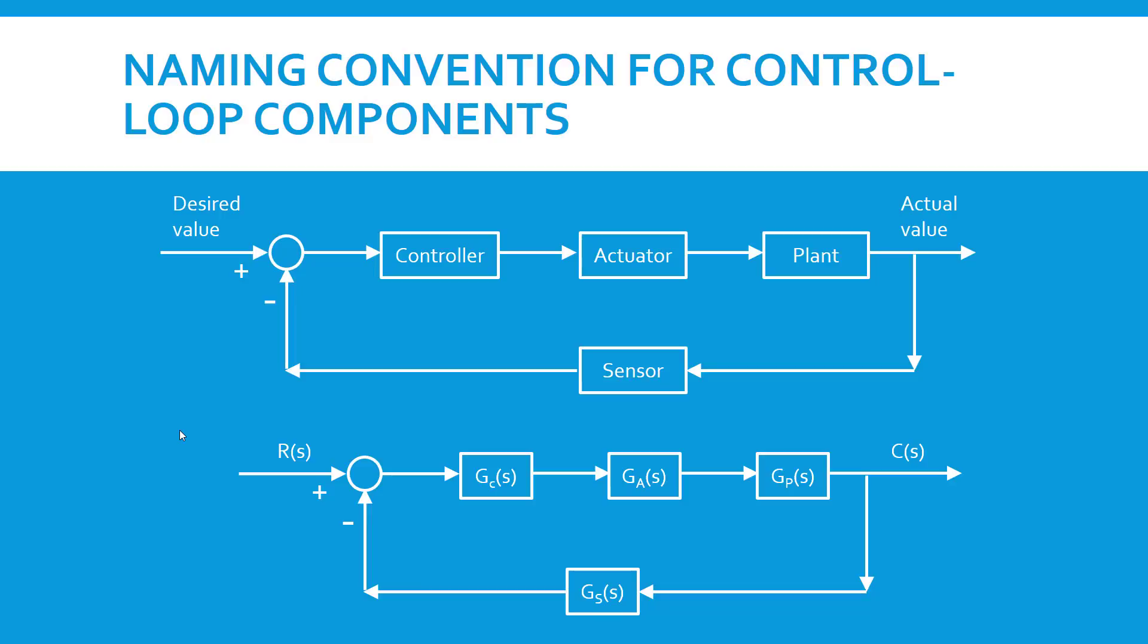The controller, the actuator, the plant and then also the sensor. Notice that in each of these cases whether it be a signal which is R or C on an arrow or a component which is in a block, they're shown as functions of S. This is a result from the fact that Laplace transforms are used as a standard solution methodology for dealing with ordinary differential equations in controls engineering. We need not concern ourselves with that here.